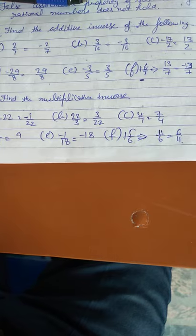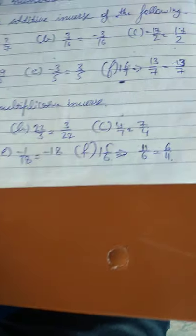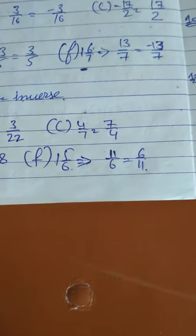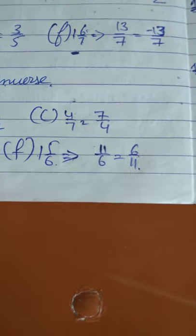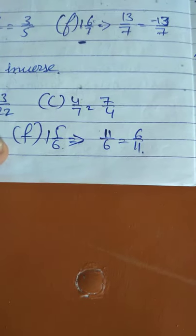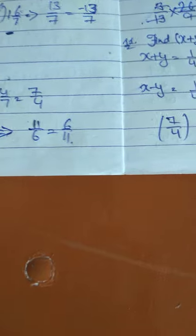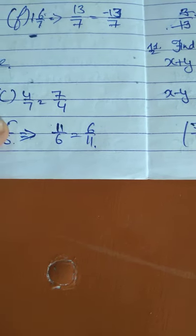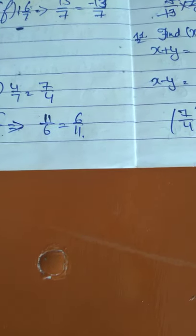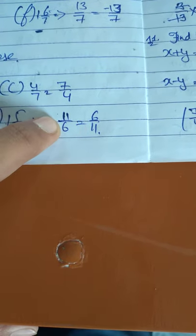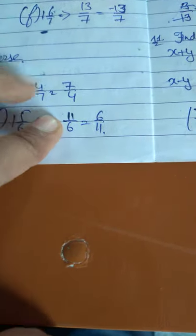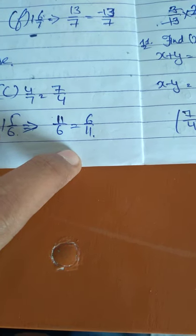You can clearly see the answers in the answer key of sum 6. For part f, which is 1 and 5 over 6, when finding the multiplicative inverse we must first convert the mixed fraction to an improper fraction, which gives 11 over 6. So the inverse of 11 over 6 is 6 over 11.